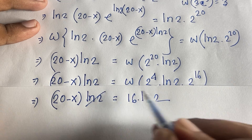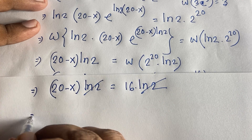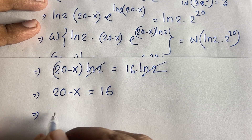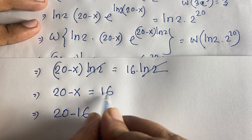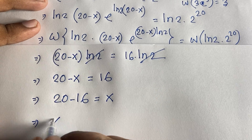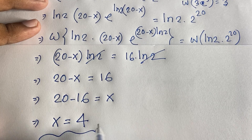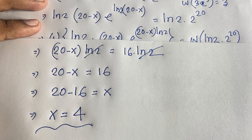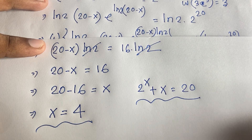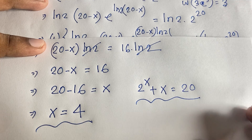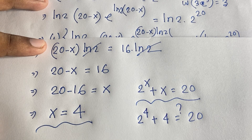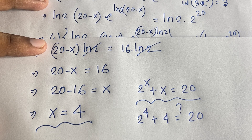From 20 minus x equals 16, moving 16 to the left and x to the right gives x equals 20 minus 16, so x equals 4. This is our final answer. Our original question was 2 to the power x plus x equals 20, and with x equal to 4 we can verify: 2 to the power 4 is 16, plus 4 is also 20. Thank you all. If you enjoyed this video, please subscribe to my channel for more interesting videos. Goodbye, take care.